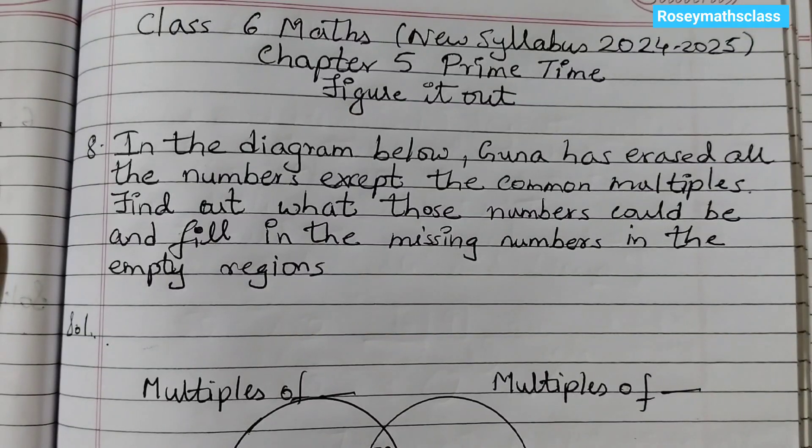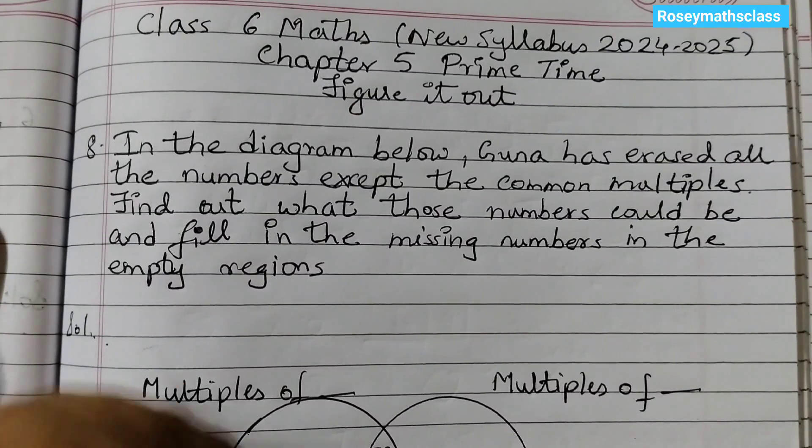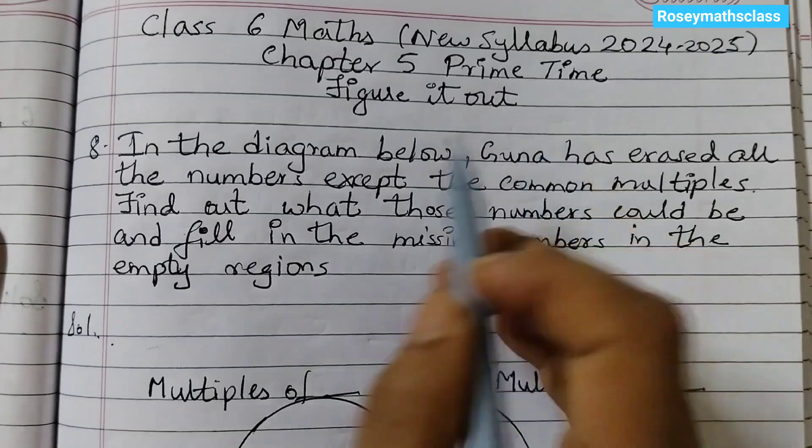Hello students, welcome back to Rosie Maths class. Today we shall discuss question number 8 of chapter 5, prime time, figure it out.